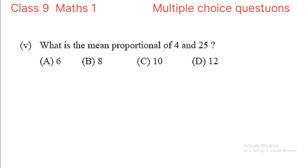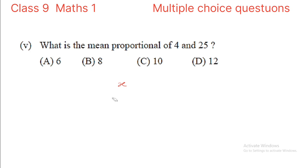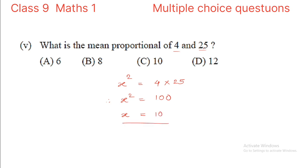Next question: what is the mean proportional of 4 and 25? The options are 6, 8, 10, or 12. Let the mean proportional be x. Then x squared equals the product of 4 and 25, that is x squared equals 100. Taking the square root of both sides, x equals 10. So 10 is the mean proportional of 4 and 25.